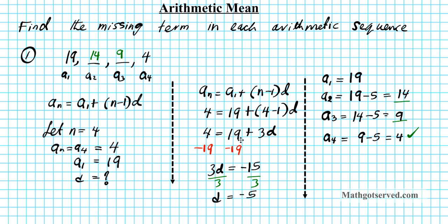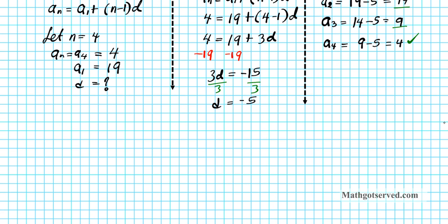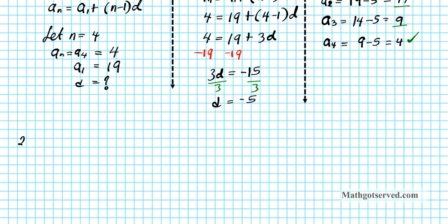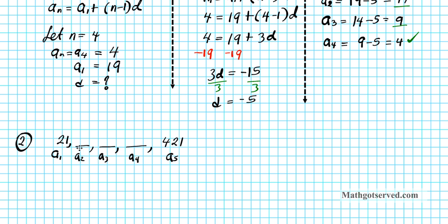For number 2, we have to find the missing terms in the arithmetic sequence: 21, dash, dash, dash, 421. We are missing three terms. So a1 is 21, then a2, a3, a4 are the missing arithmetic means, and a5 is 421. We need to find the values of three arithmetic means.